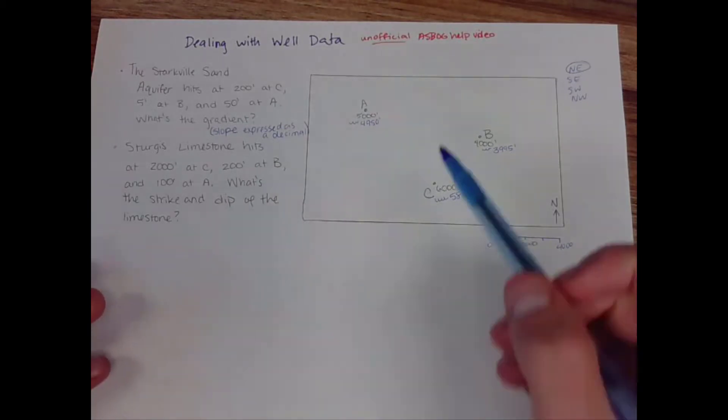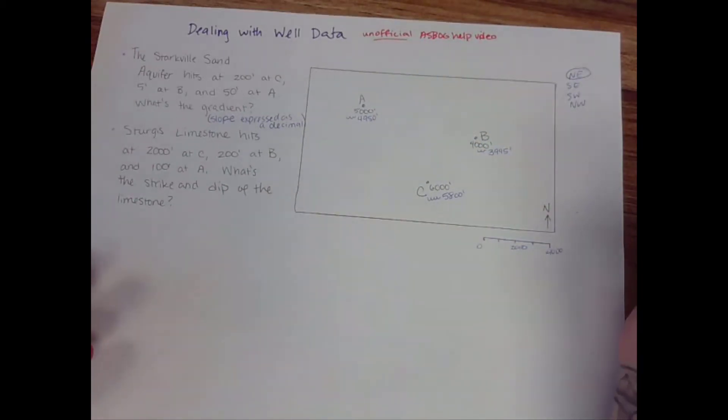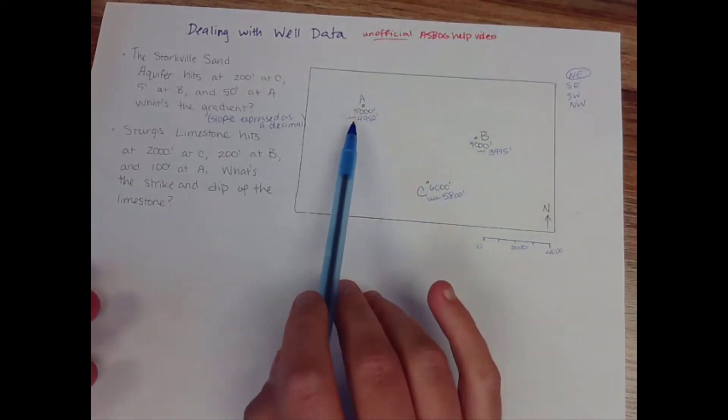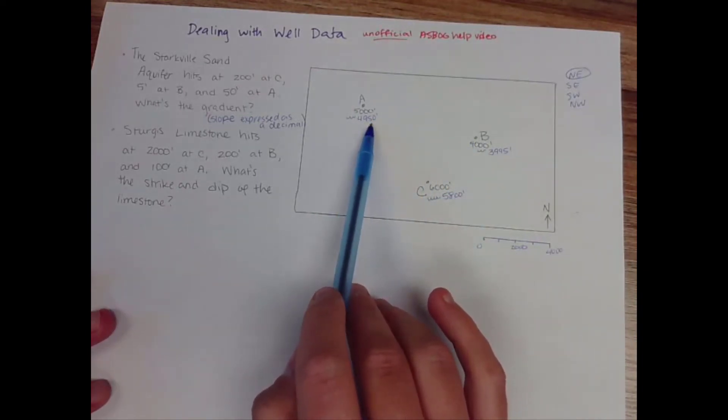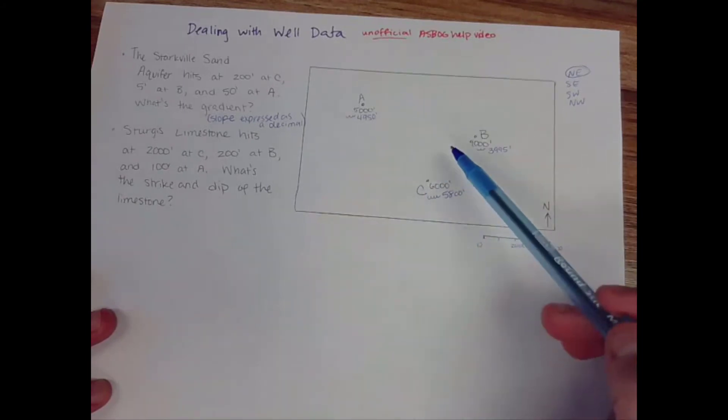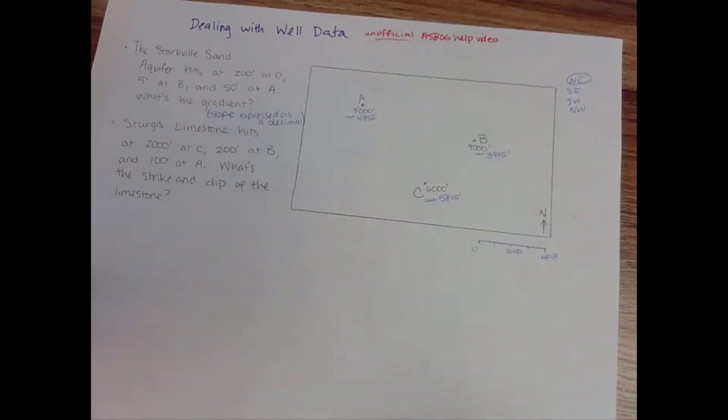So what you would do then is say that this is my intermediate value. My intermediate value also kind of exists between these two points. I'm going to essentially do a three point problem to get the gradient here and the direction of water flow. So let's do that.